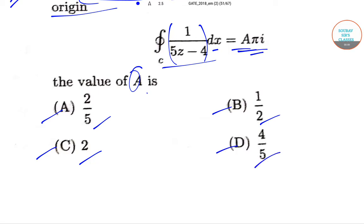Now if we take 5z minus 4 and equate it to 0, then this gives us z is equal to 4 by 5. And we know that z equal to 4 by 5 lies inside the circle.